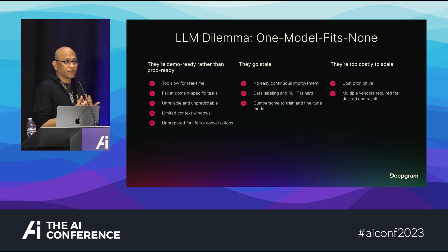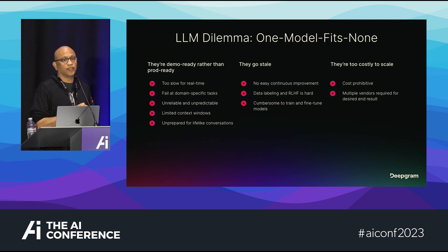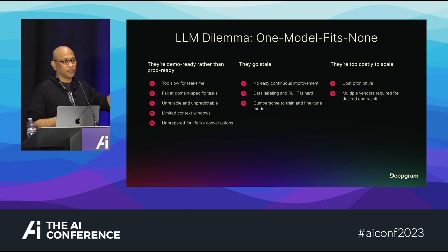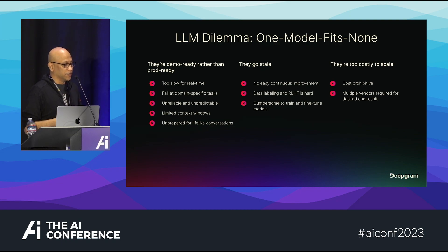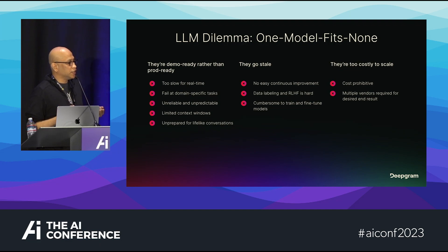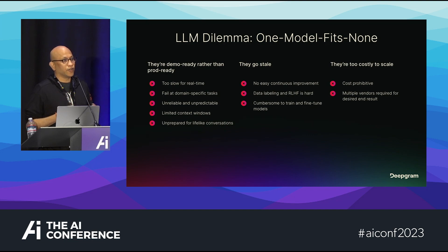They fail at domain-specific tasks. They go stale — model drift is real, especially as new data, new customers, and new products get released; models don't understand them and need continuous updates. As a sidebar, I came from GitLab, which was CI/CD and DevOps, so I really relate to this problem. And we found that large language models are costly to scale, especially when you want a high volume of inferences.